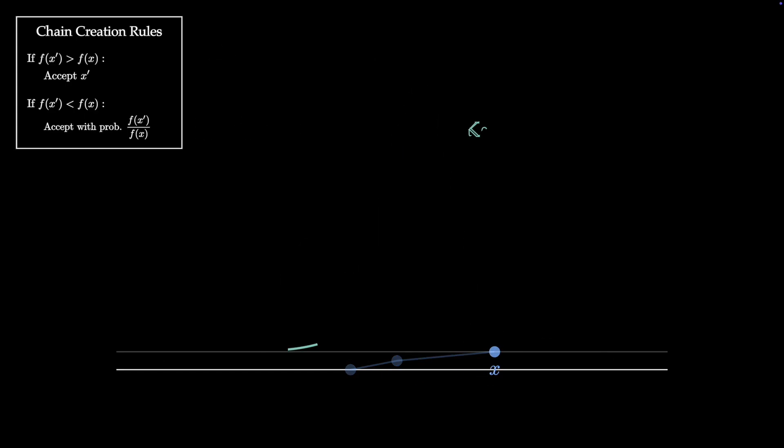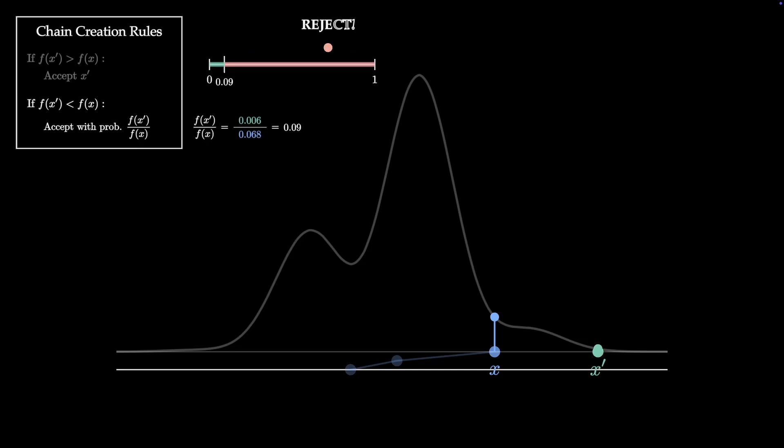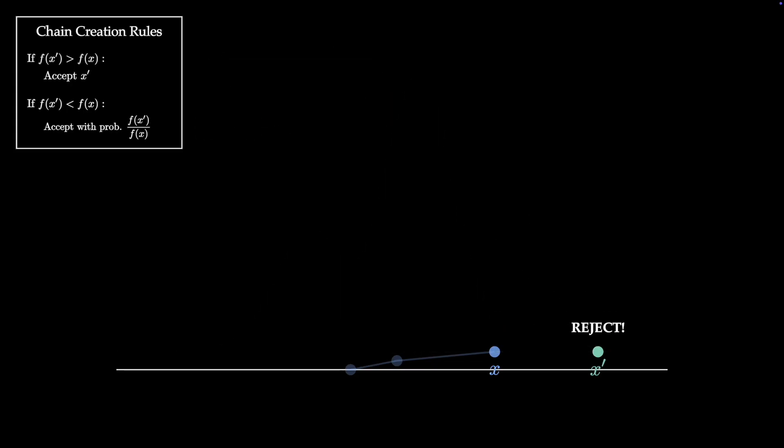We repeat this process again for the next sample. Form the kernel, draw a proposed sample from the kernel, evaluate the densities, and refer back to the rules. In this case, we're back to rule 2, but this time with an acceptance probability of 0.09. This time, when we draw a random number between 0 and 1, we get a value that's greater than 0.09 and therefore we reject the sample. Whenever we reject a sample, we simply add the current sample again as the next point in the chain.